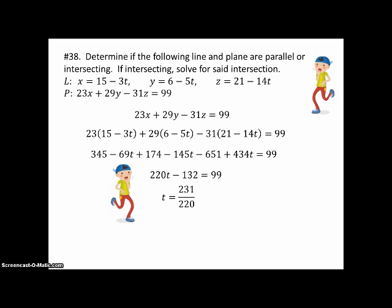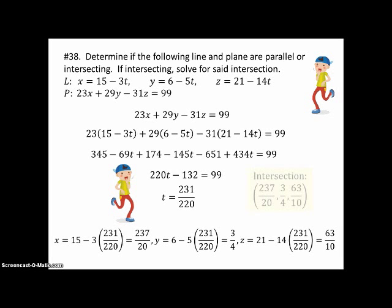And then we just have to substitute that number back into the parametric equations for the line to get our point of intersection. Silly numbers. And so after we do that, there's our point of intersection. It's a single point. So the line passes through this plane.